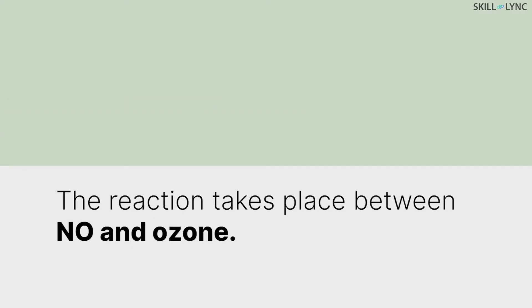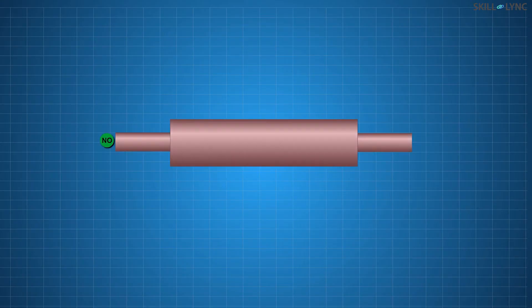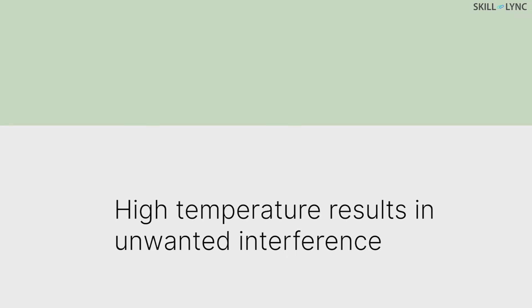As we discussed, the reaction takes place between NO and ozone. Therefore, it is necessary to convert all NOx in the sample to NO so that the reactions can occur. These were first done by heating the sample at high temperatures. This converts all NO2 in the sample into NO. But this high temperature favors conversion of other nitrogen molecules, like ammonia, resulting in unwanted interference in the results.